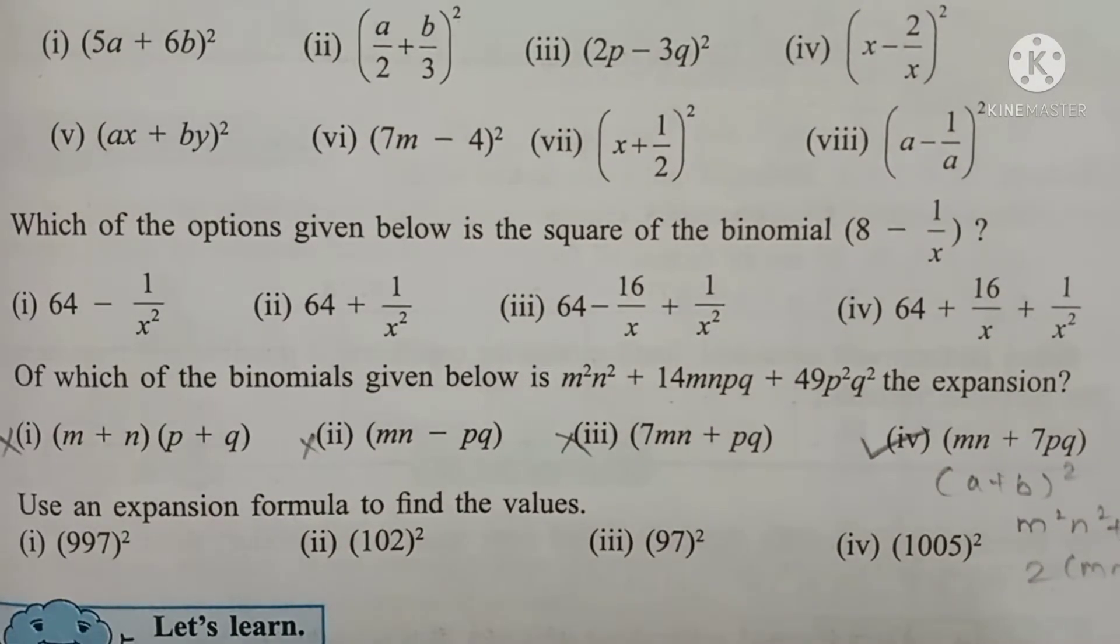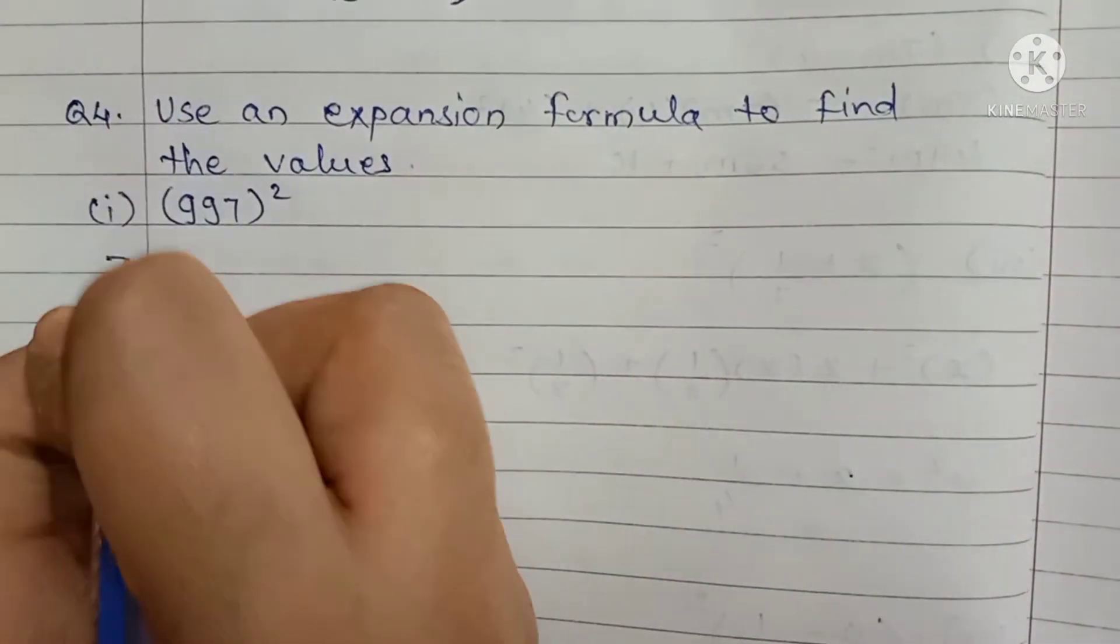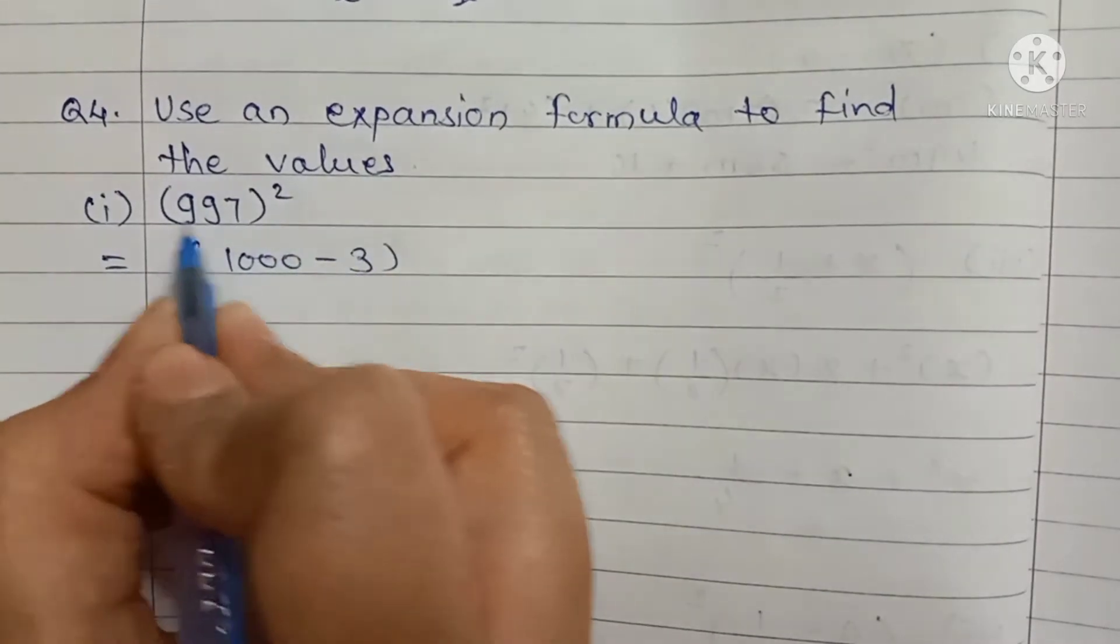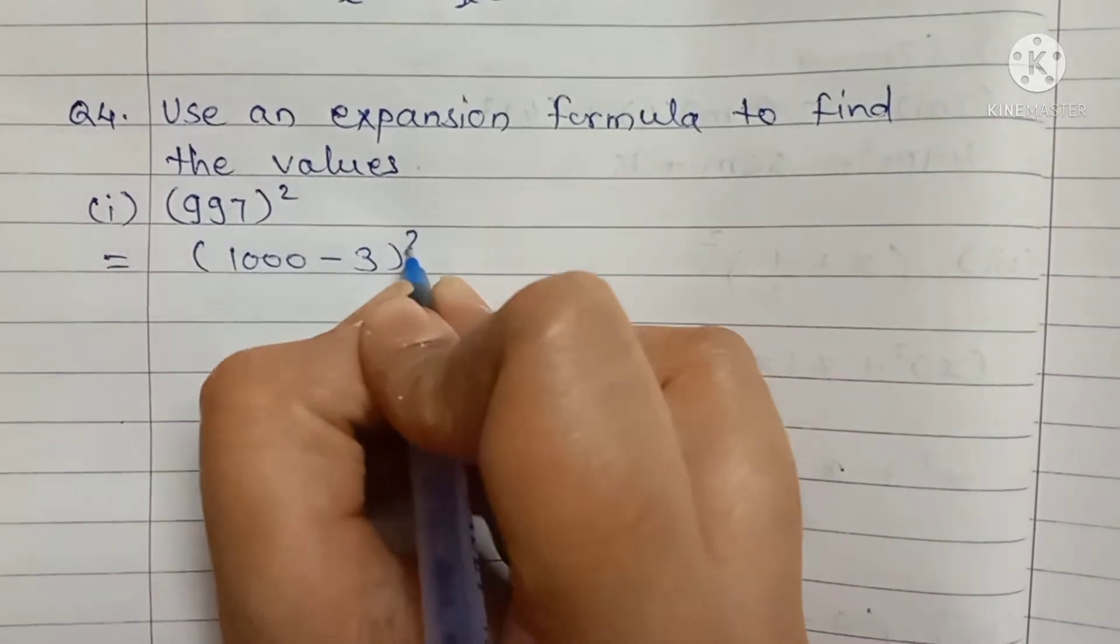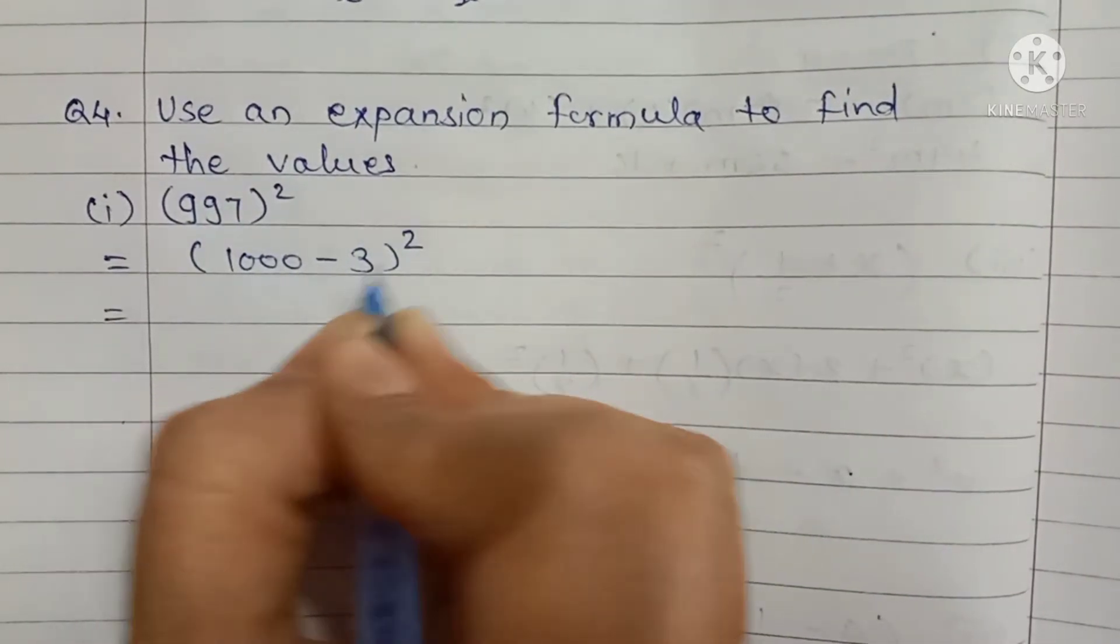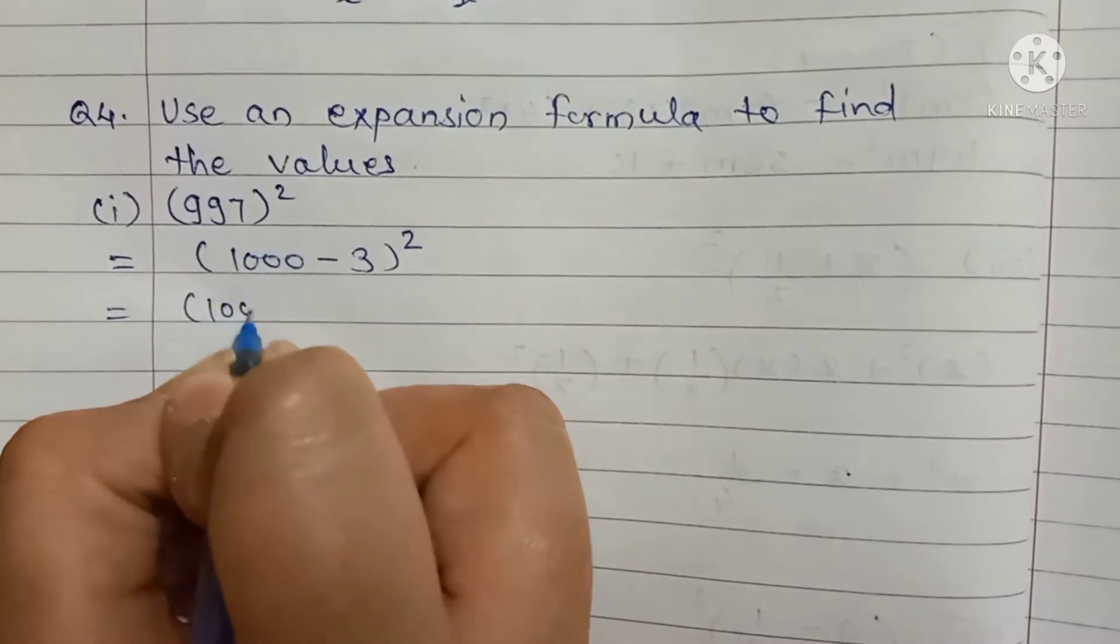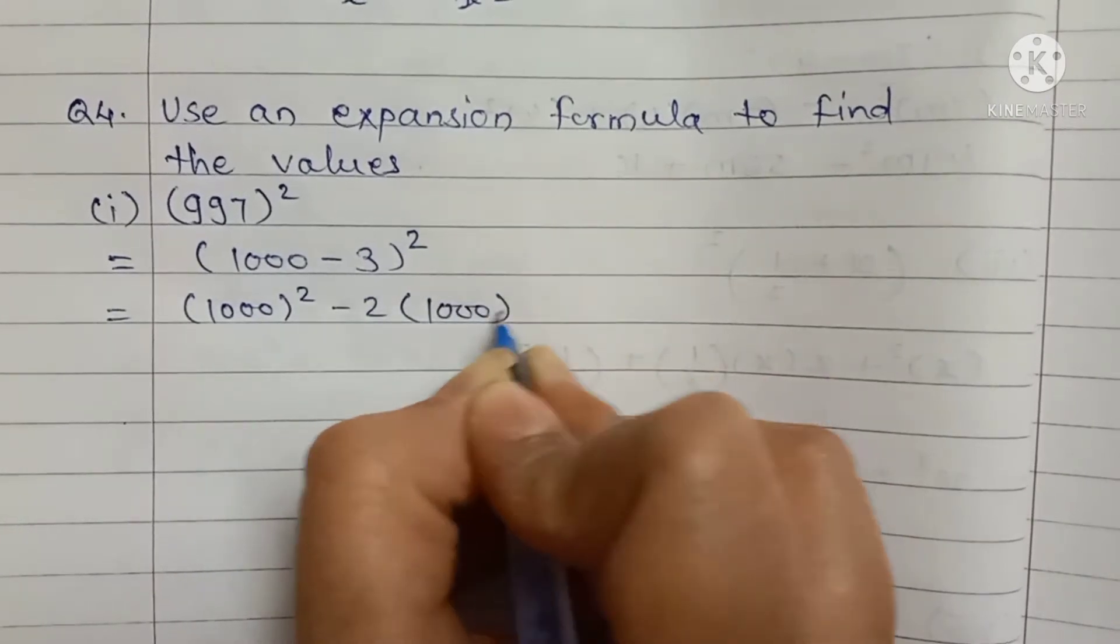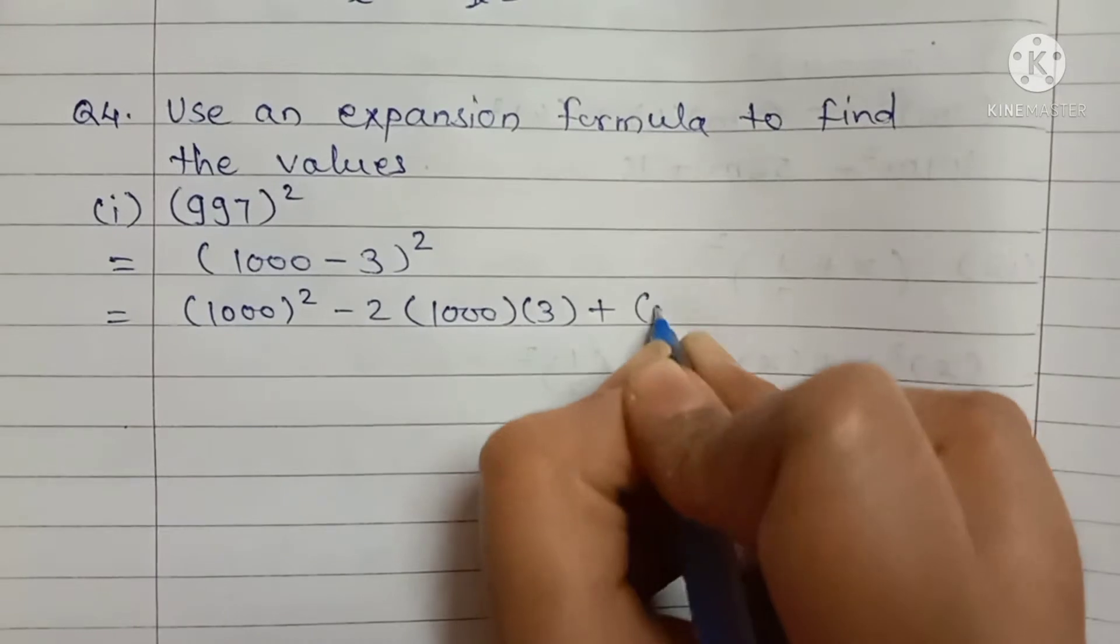First is 997 squared. How to write 997? 1000 minus 3. So 997 squared equals 1000 minus 3 bracket square. This means A minus B bracket square formula. We will use A² means 1000² minus 2AB means 1000 into 3 plus B² means 3².